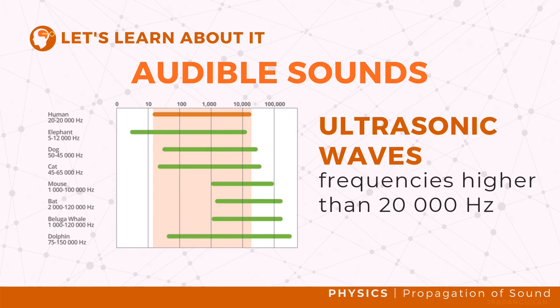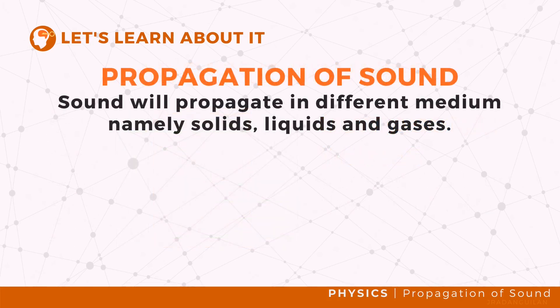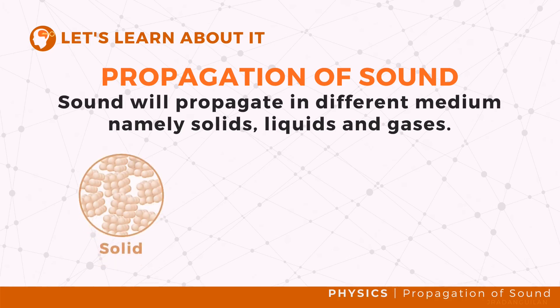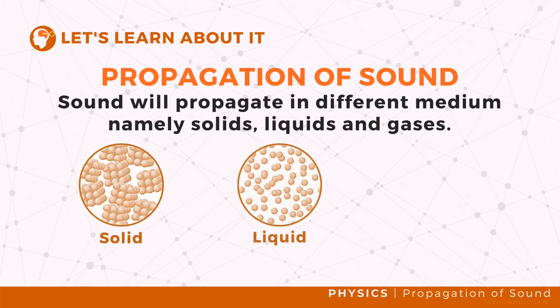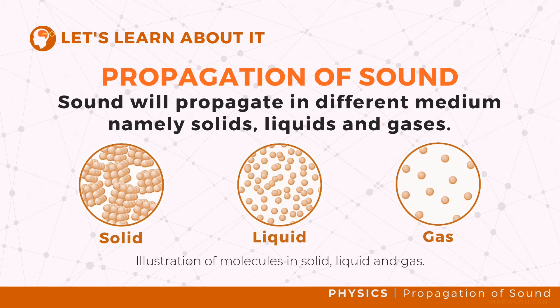How does sound propagate? As a mechanical wave, sound needs a medium to propagate and transmit energy. The speed at which sound is transmitted depends on the medium — namely solid, liquid, and gas. This can be explained by the difference in the arrangement and movement of the particles in each medium.